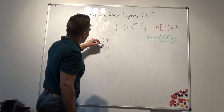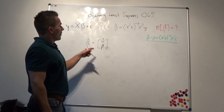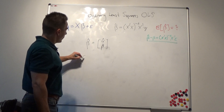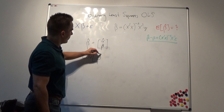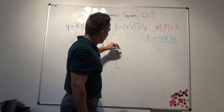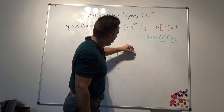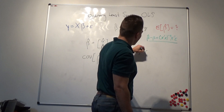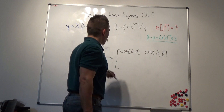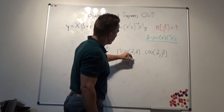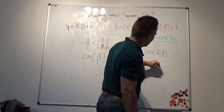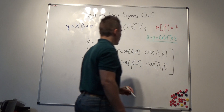In the simple CAPM case with one asset, the covariance matrix of our beta vector is a two-by-two matrix. It contains: the covariance of alpha-hat with alpha-hat, the covariance of alpha-hat with beta-hat, the covariance of beta-hat with alpha-hat, and the covariance of beta-hat with beta-hat.